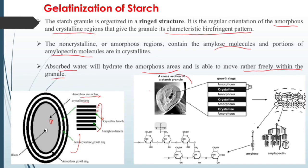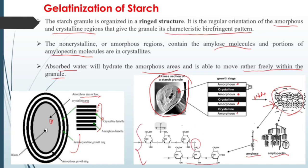This is a cross-section of a starch granule. We can see the highlighted pattern: amorphous, crystalline, amorphous, crystalline. The absorption of water will occur at this amorphous region. When we add water, swelling of these granules will occur. This structure of starch is composed of amylopectin and amylose — the linear one is amylose, and the branched one is amylopectin.